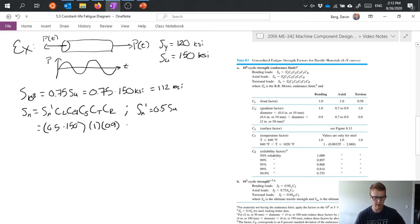Surface factor we would refer to figure 8.13. The setup for this problem says that it is a commercially polished surface so that's a pretty good surface and if we look at table 8.13 under these conditions or excuse me figure 8.13, 0.9 would be our surface.